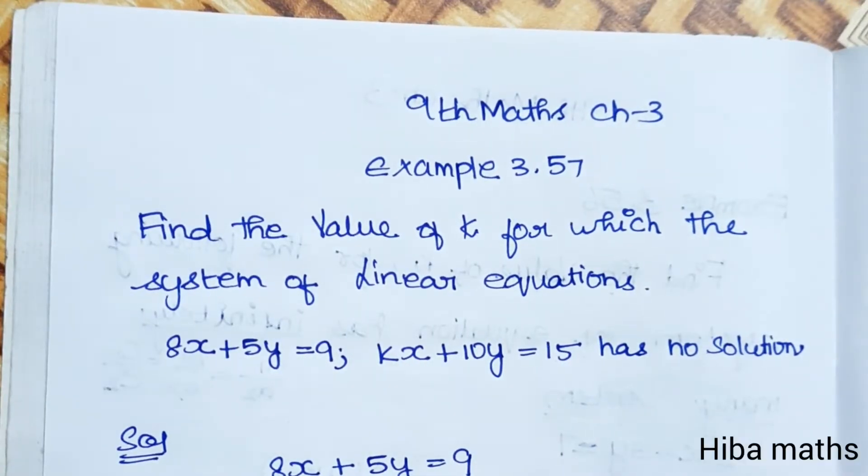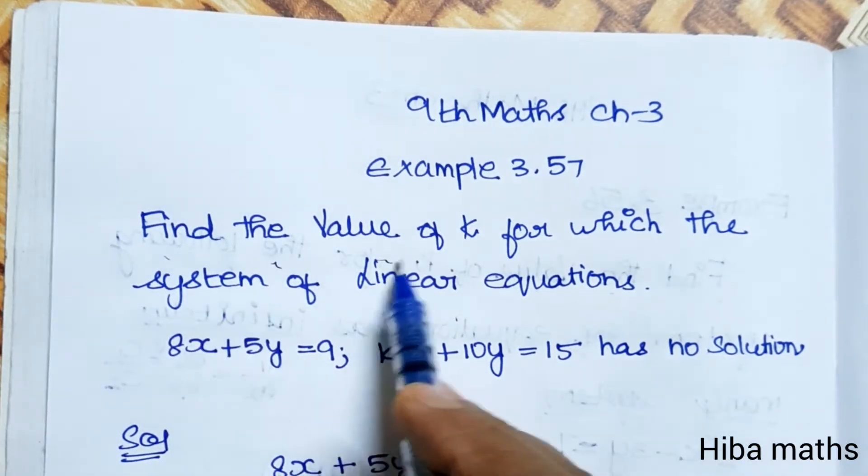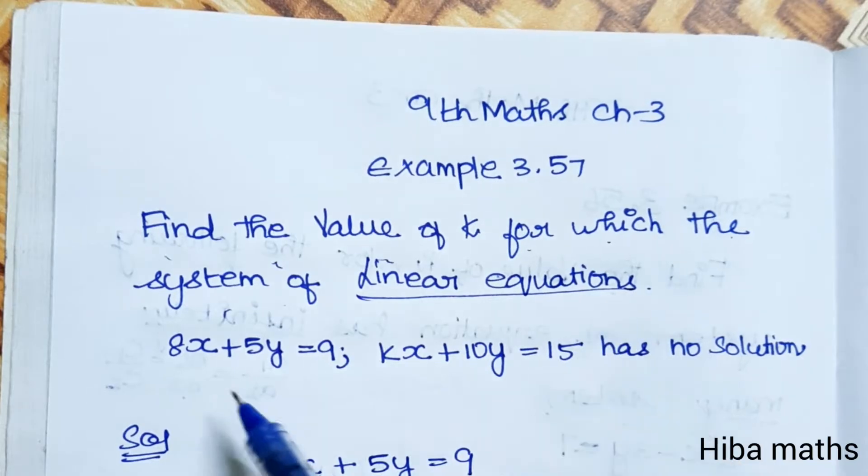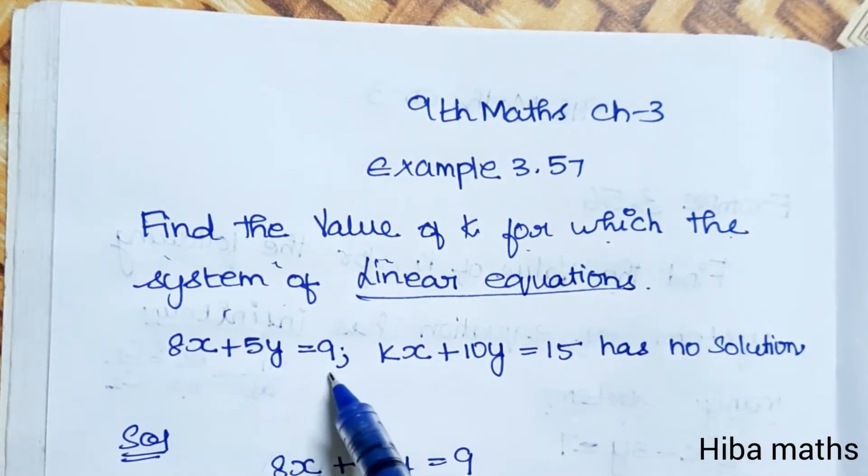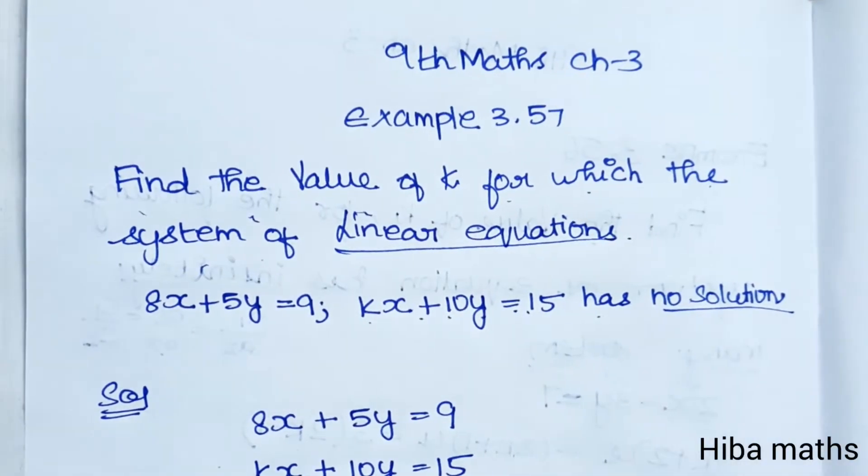Hi students, welcome to Hiba Maths, 9th standard Math, Chapter 3, Example 3.57. Find the value of k for which the system of linear equations 8x + 5y = 9 and kx + 10y = 15 has no solution.